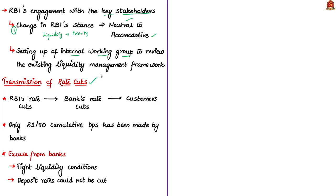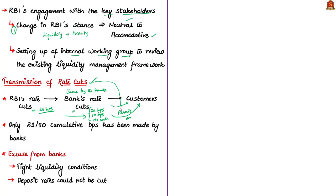The author notes that transmission means when RBI reduces policy rates, the same cuts must be passed on to borrowers by the banks. For example, if RBI cuts the policy rate by 25 basis points, some banks may cut by 25 basis points, some by only 10 basis points, and some not at all. RBI itself has admitted that only 21 of the cumulative 50 basis points rate cut from the February and April monetary policies was passed on to borrowers, meaning banks are not regularly passing on rate cut benefits.